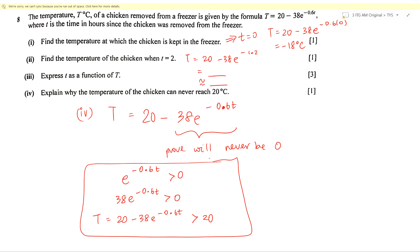As time passes, after a very long time the temperature will get closer and closer to 20, because e^(−0.6t) where t is very large gets closer and closer to zero. For example, e^(−100) ≈ 3.72 × 10^(−44), which is very close to zero. So 20 minus 38 times a very small number approaches but never equals 20.